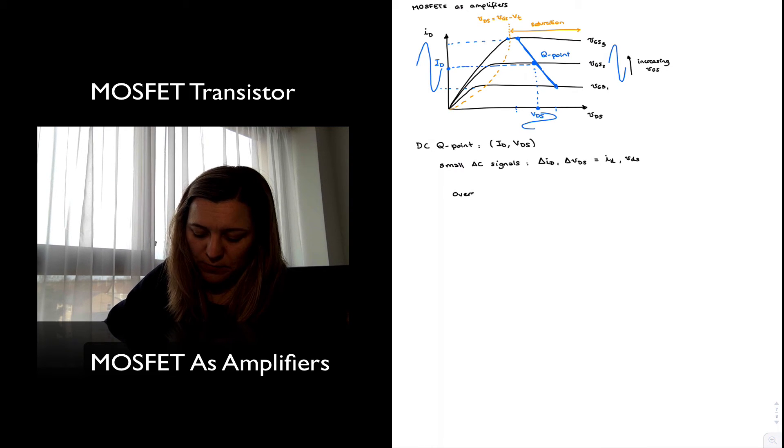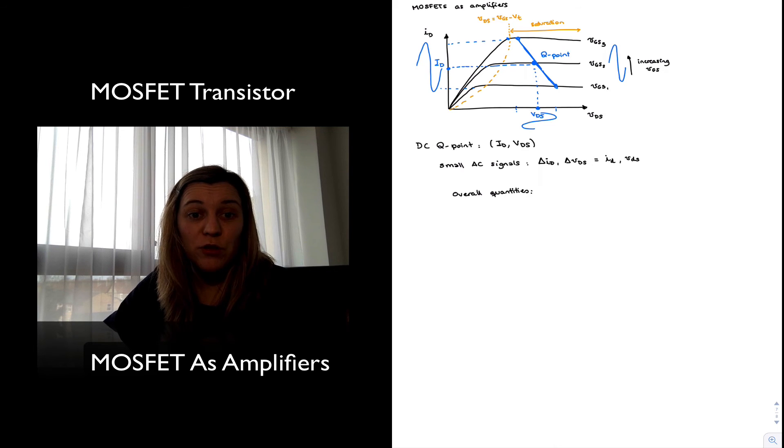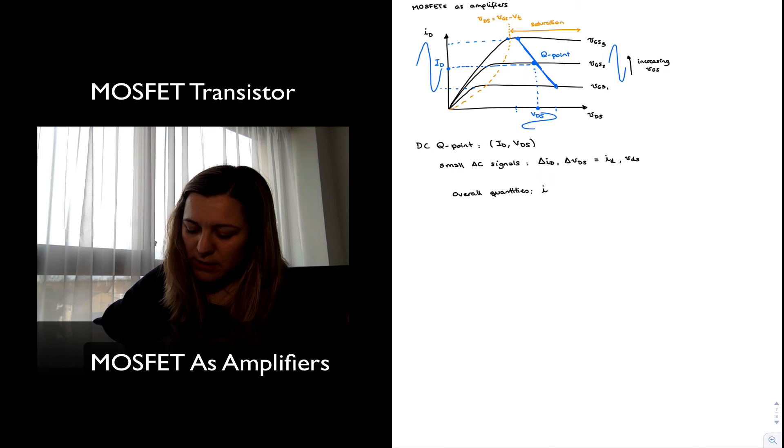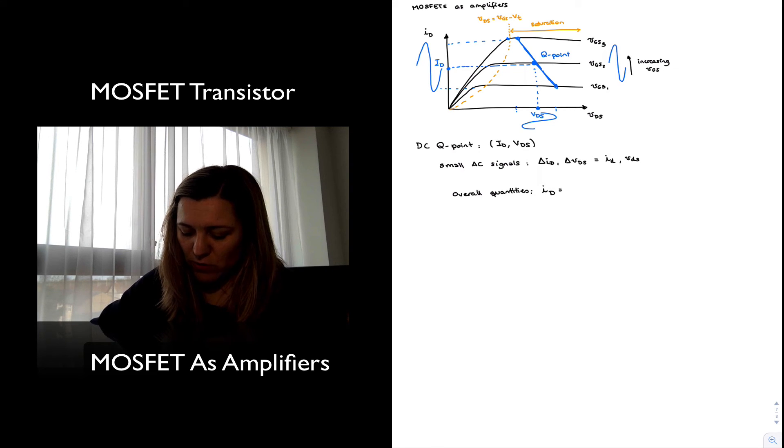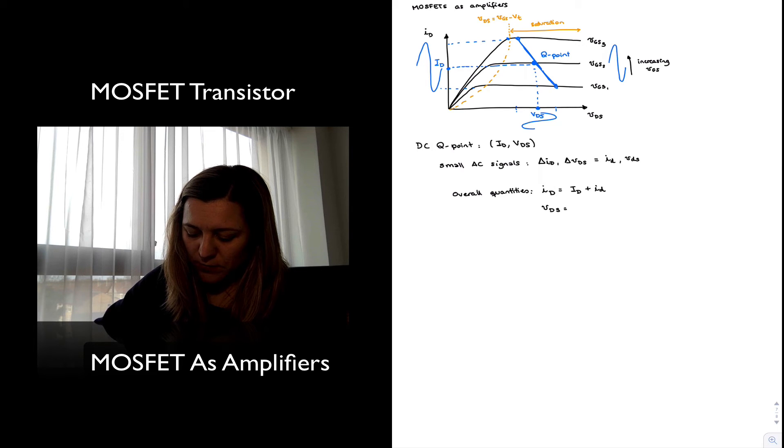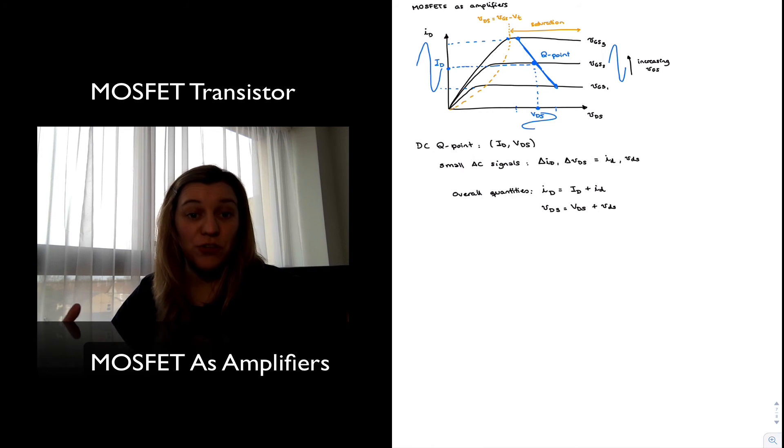The overall quantities which we also refer to as the instantaneous value of ID, VDS or any other parameter, I'm going to represent with a lowercase letter, uppercase subscript. And it's obviously the superposition or the sum of the DC value, the DC component plus the AC component. Same thing with VDS would be the quiescent DC component plus the small signal variation or the AC component.